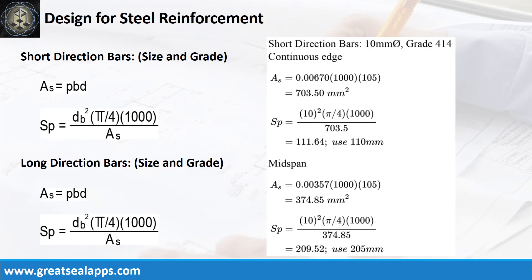At short direction, given continuous edge ρ equals 0.0067, b equals 1,000 mm, and d equals 105 mm. The area of steel is 703.5 mm². The spacing for 10 mm bar is 110 mm.